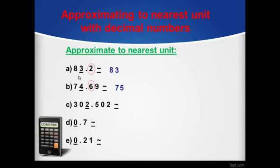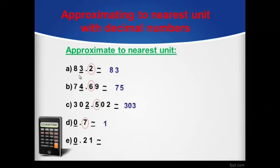Don't forget to cancel out the decimal part. Next one: 302.502. We will keep numbers before the units digit the same as it is — 30. Then we will look at the tenths digit, which is 5, a strong number. That will give 1 to our units, and 2 will become 3, and the decimal part will be cancelled out. Next: 0.7 — we don't have numbers before the units digit, so we look directly at the tenths digit, which is 7, a strong number. It will give 1 to our units and 0 will become 1, and the decimal part is cancelled out.